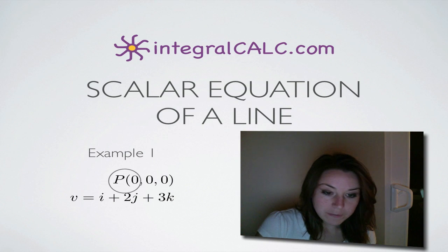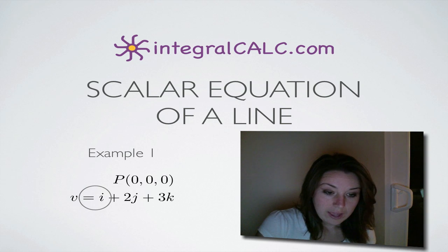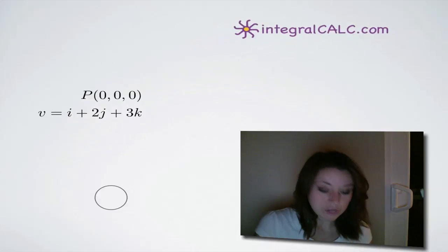And in this particular problem, we're given a point P at zero, zero, zero, the origin and a vector V, which in our case is i plus two j plus three k.